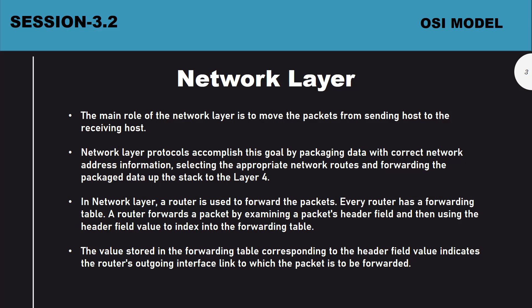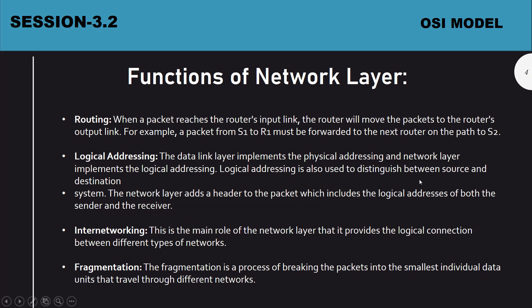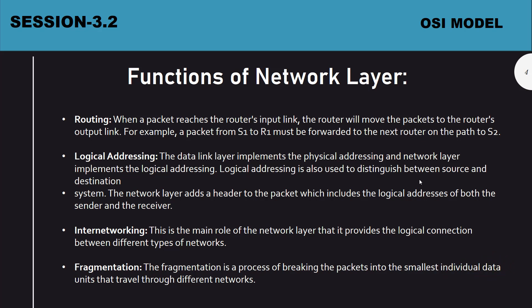The router is also called a layer 3 device. In the network layer, IP address — which is a unique name assigned to a particular device in a network — is an important protocol. There is physical addressing, which is the MAC address used in the data link layer by switches, and logical addressing, which is the IP address used in the network layer by routers for routing.